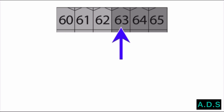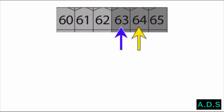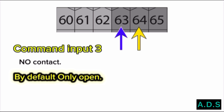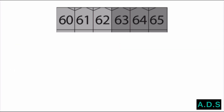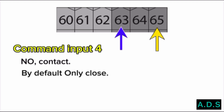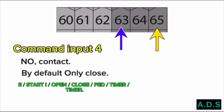Terminal 63 is the common for terminals 64 and 65. Terminal 64 with common 63 — command input 3. It is an NO contact, by default configured as only open. Terminal 65 with common 63 — command input 4. It is an NO contact, by default configured as only close. All command inputs can be configured — for example, if start has opened, it will close after a set timer.